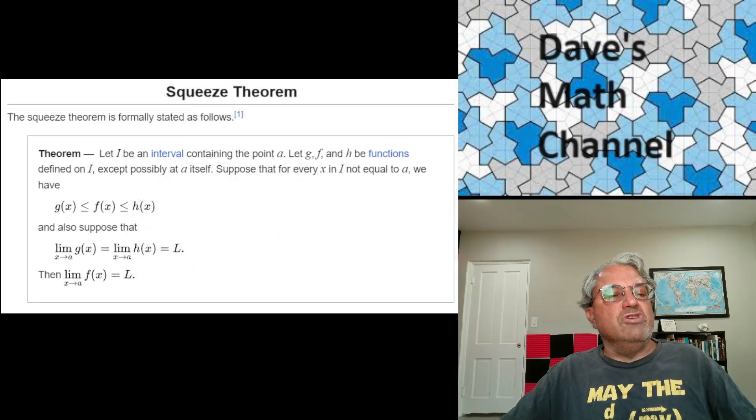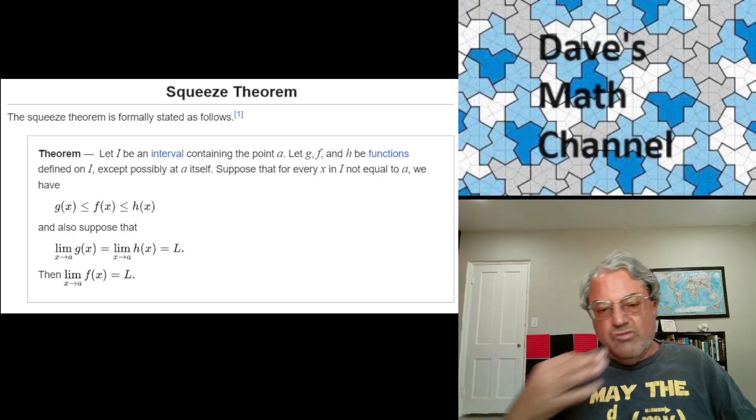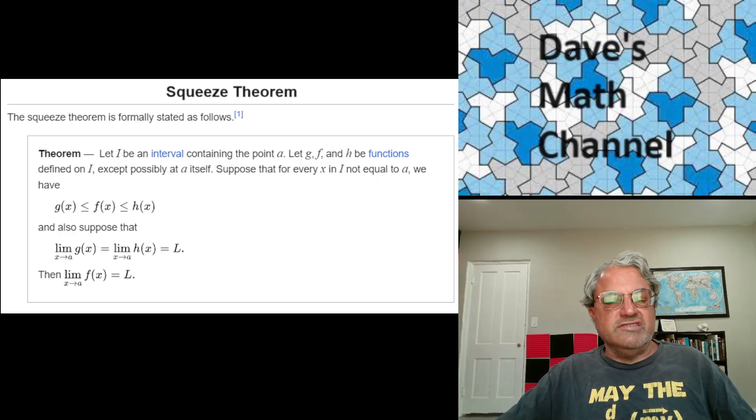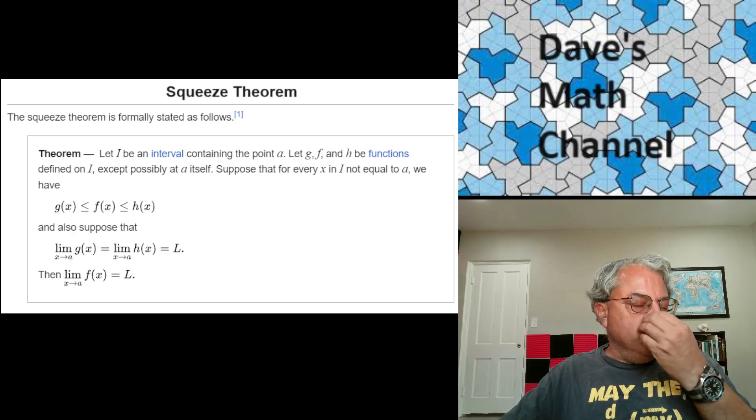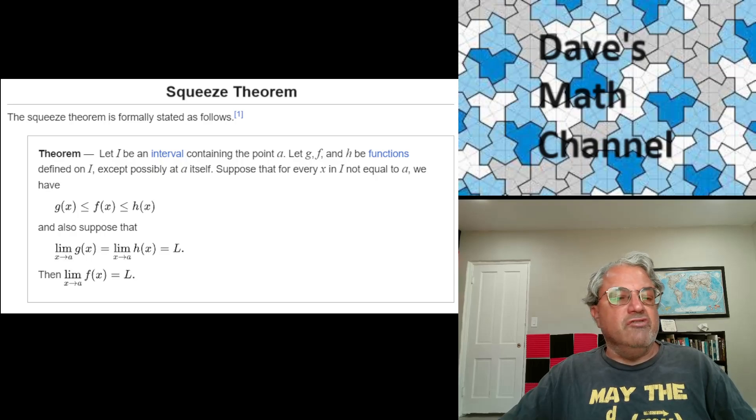So here's the statement of the Squeeze Theorem. We have three functions here, three continuous functions, which we're calling g of x, f of x, and h of x. And all three of these functions are defined on some interval, which we call I. It doesn't have to be defined at every point on this interval, but it has to be defined at every point except for one point where we want to find the limit, and we're calling that point A. So you can think of I as an interval, except for a single point in the interval, called A, where these functions might not be defined, but they have a well-defined limit at A.